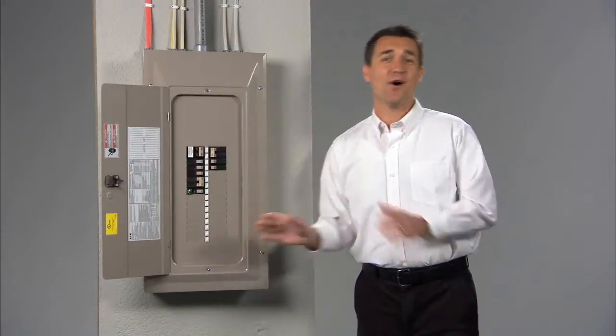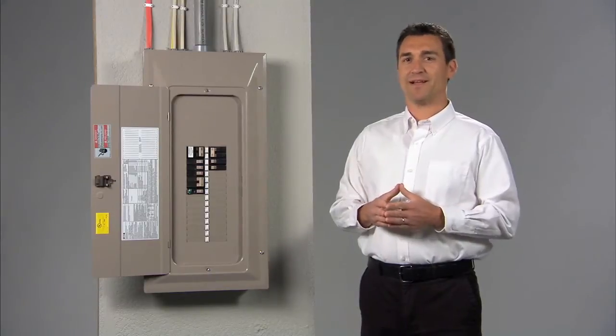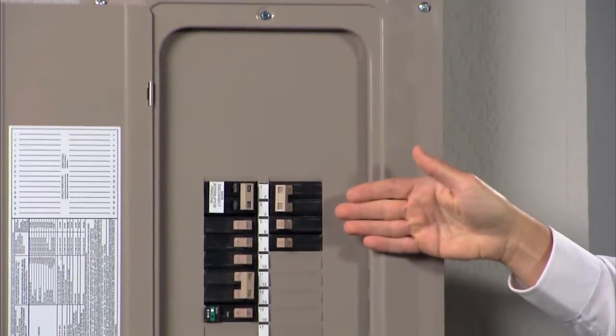Your electrical panel is the heart of your home's electrical system. Power comes in from the utility lines outside and then it's distributed throughout your home by passing through these circuit breakers.